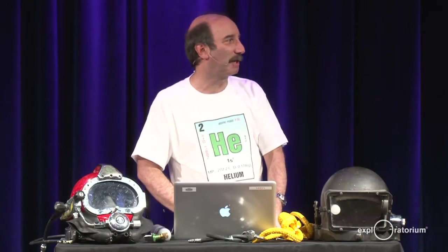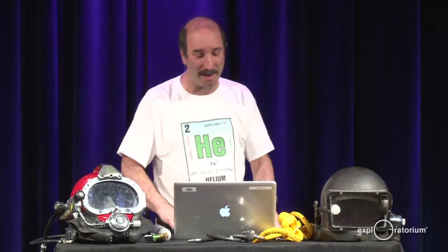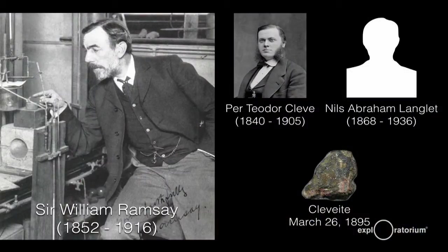It took a little while longer to discover helium on Earth. Sir William Ramsay was the person given credit for the discovery of helium on Earth. He was looking at a mineral called cleavite, which contains some radioactive elements, and he noticed that a mysterious gas was given off by that rock. That gas he determined was helium — so helium was being given off by this radioactive rock.